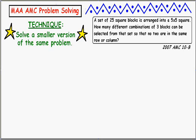I've selected a problem from the 2007 American Mathematics Competition Exam for the 10th grade, the B exam. A set of 25 square blocks is arranged into a 5 by 5 square. How many different combinations of three blocks can be selected from that set so that no two are in the same row or column?